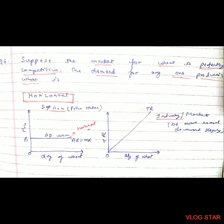Question 6: Suppose the market for wheat is perfectly competitive. The demand for any one producer's wheat is horizontal. The first graph denotes a single firm and the other graph denotes the market or industry. The single firm is a price taker, taking the same price set by the market. So the demand curve for the single firm is horizontal, while the market demand is negatively sloped from left to right, as normal demand curves are.